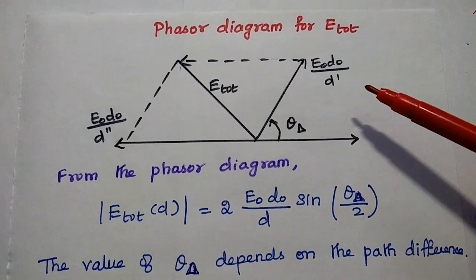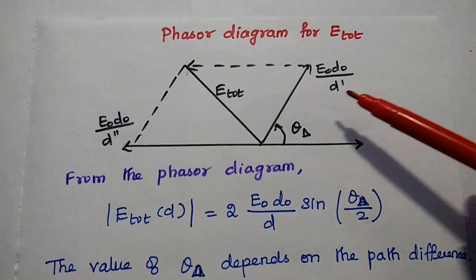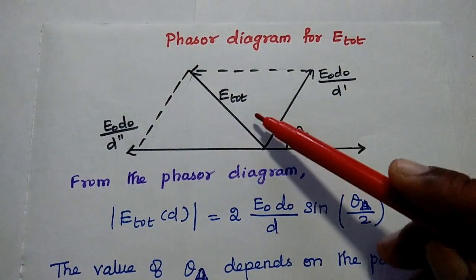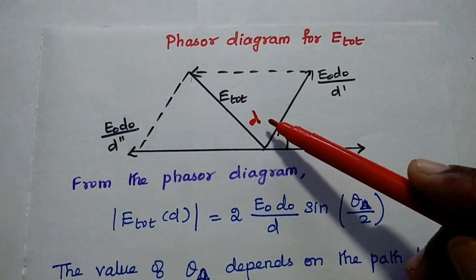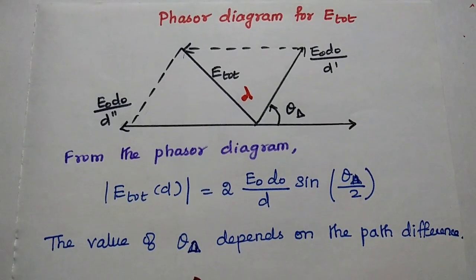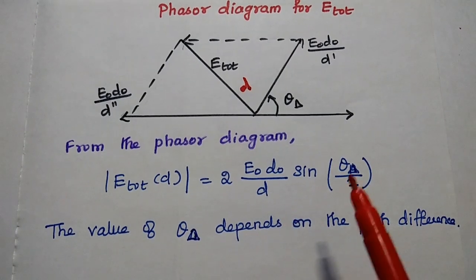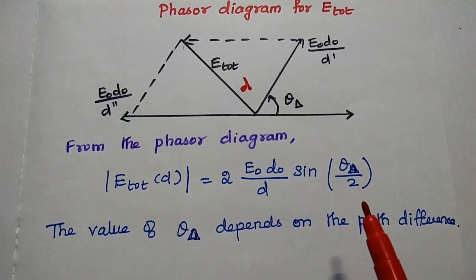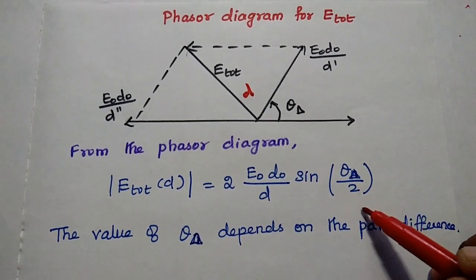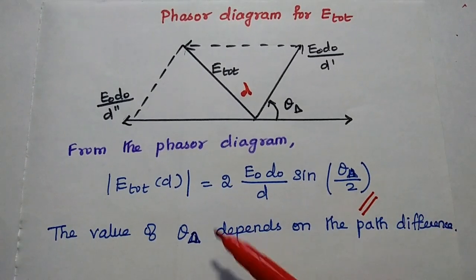Finally, we analyze the phase of the total electric field using a phasor diagram. This diagram shows the direct path component and the reflected path component. From the phasor diagram, we obtain the total electric field as |E_total| = 2 * E0*d0/d * sin(theta_delta / 2). Here the value of theta_delta depends on the path difference, and this is the final representation of the total electric field as a function of the distance d.